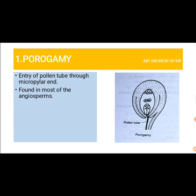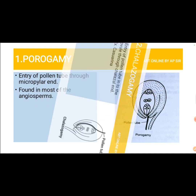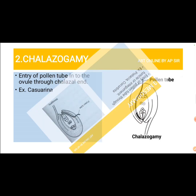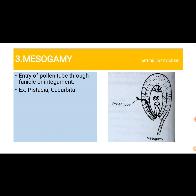In chalazogamy, the pollen tube enters the ovule through the chalazal end. An example is Casuarina. In mesogamy, the pollen tube enters the ovule through the funicle or integument. Examples include Pistachia and Cucurbita.